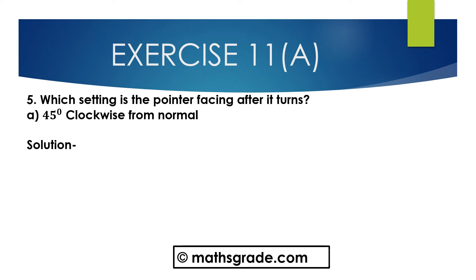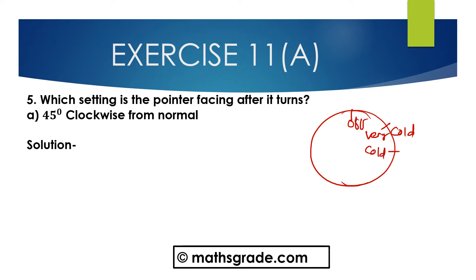Now we will solve question number 5. Which setting is the pointer facing after it turns 45 degrees clockwise from normal? This figure is given. Now we will see the pointer — here we have to find the setting name. In previous question number 4, we found out the degree of this pointer, but here the degree is given and we have to find out the pointer name.